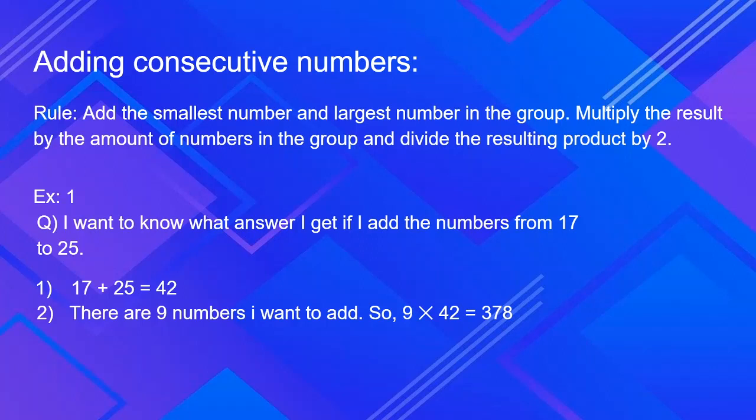The final step is divide the resulting product by 2. So that would be 378 divided by 2 which is 189. So the sum of the numbers from 17 to 25 is 189.